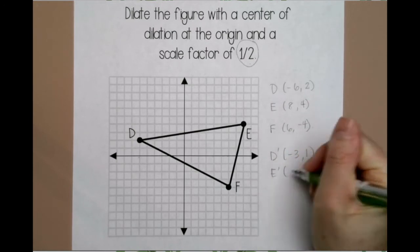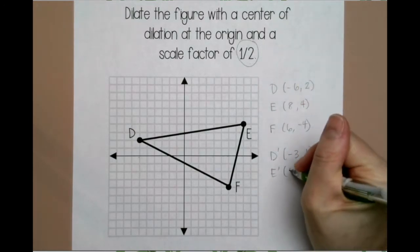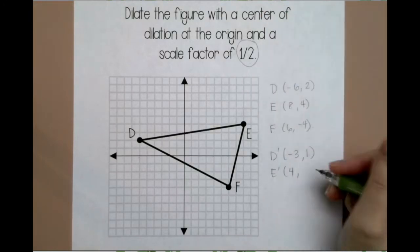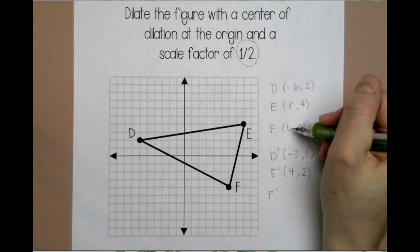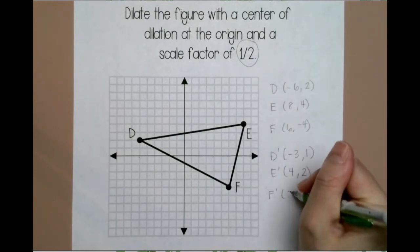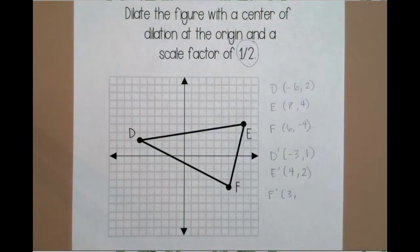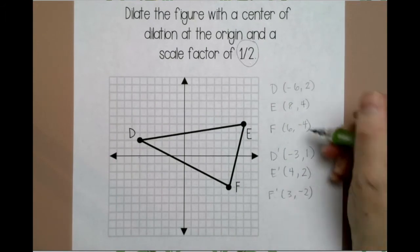Same thing for E. 8 times 1/2, which is 4. 4 times 1/2, which is 2. When you multiply by 1/2, really you're just dividing by 2. That's the same thing. 6 times 1/2, which is 3. Negative 4 times 1/2, which is -2. Notice the signs never change, only the numbers change. The signs will remain the same.